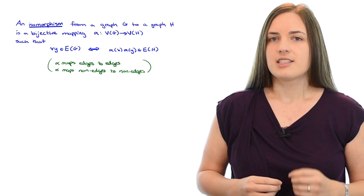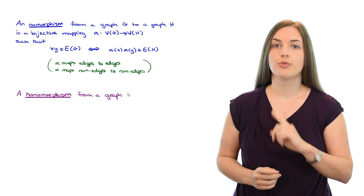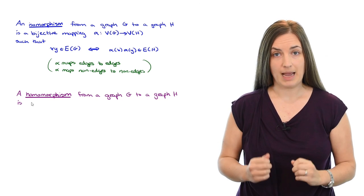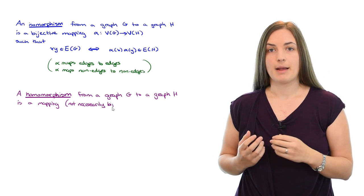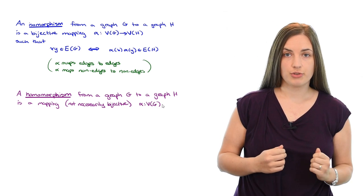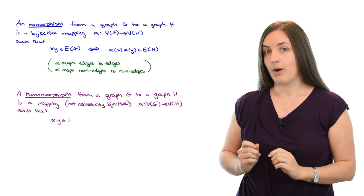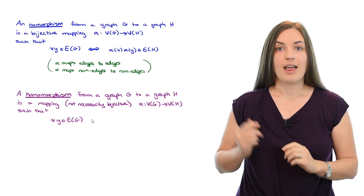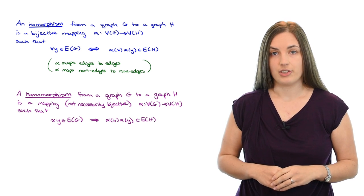Now let's define a graph homomorphism. A homomorphism from a graph G to a graph H is a mapping which is not necessarily bijective. Alpha maps from the vertices of G to the vertices of H such that if XY is an edge of the graph G then alpha of X, alpha of Y is an edge of the graph H.